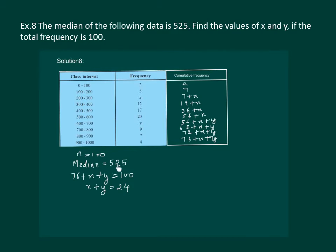Now that median is 525, it lies in the class interval 500 to 600, so 500 to 600 is the median class. So we have L which is the lower limit equal to 500. Frequency corresponding to the median class is 20, so f is 20. Cf which is the cumulative frequency of the preceding class is 36 plus x, and h which is the class size is 100.